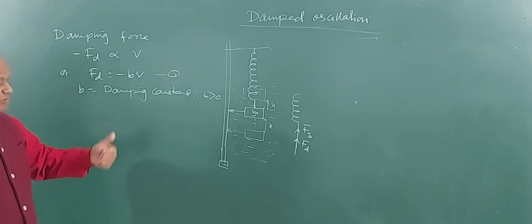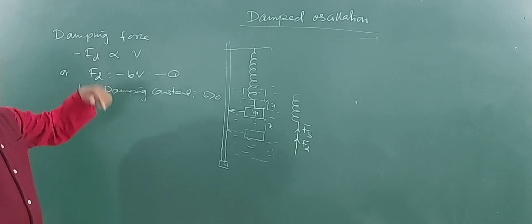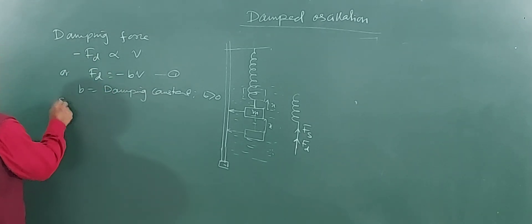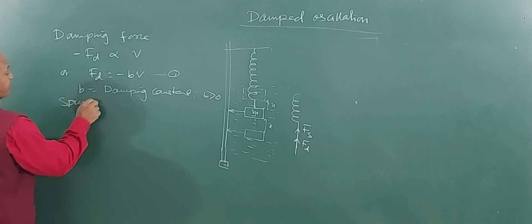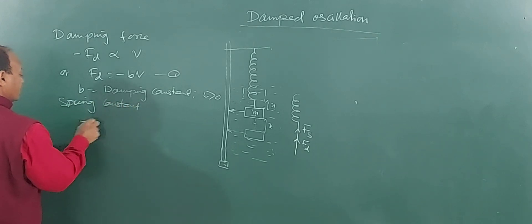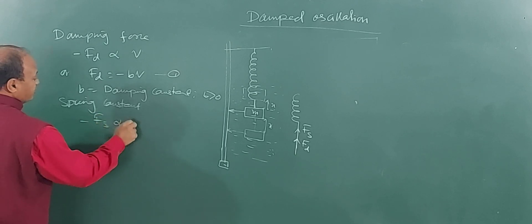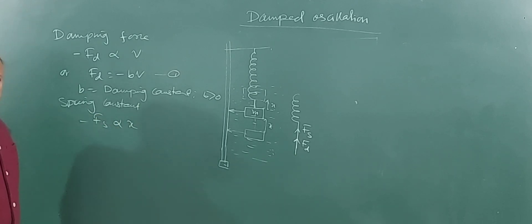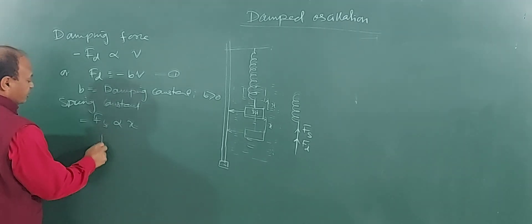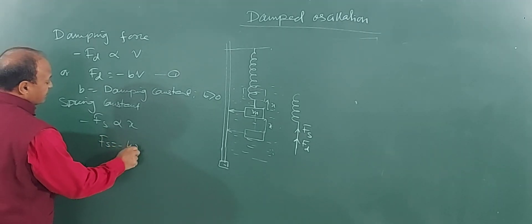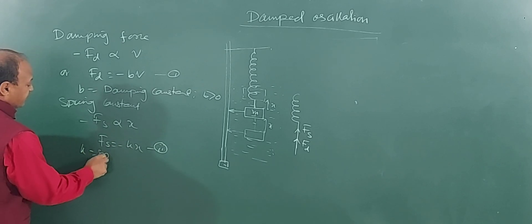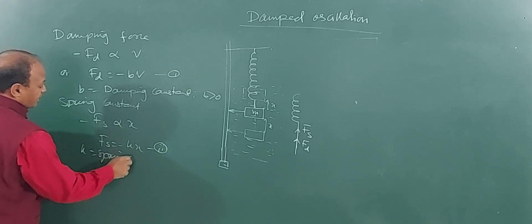If the velocity is down, the force is up; if the velocity is up, the force is down. Similarly, the spring force: Fs is directly proportional to x, which by Hooke's law gives Fs equals minus kx — which you already know — where k is the spring constant.